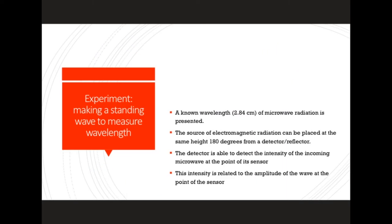To measure a wavelength using a standing wave, you first have to make a standing wave. We're going to need a source of the microwave. We'll call this the source, s. It'll be plugged in and it'll give us our microwaves.